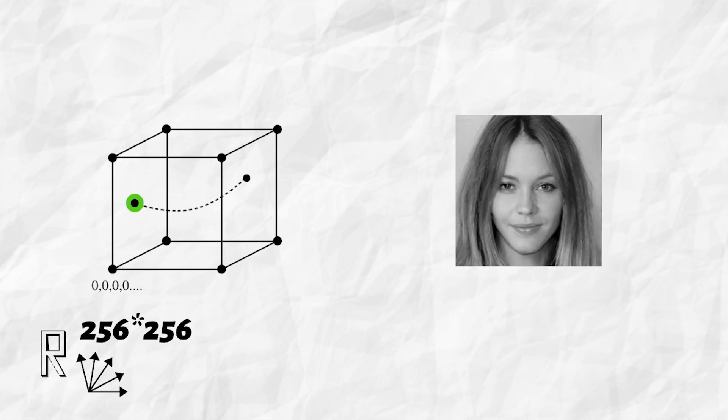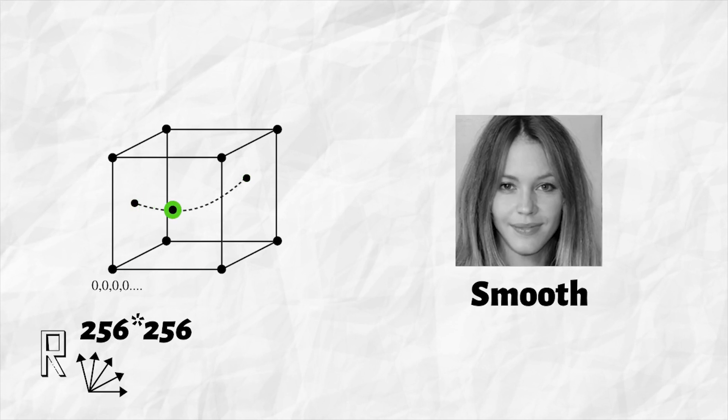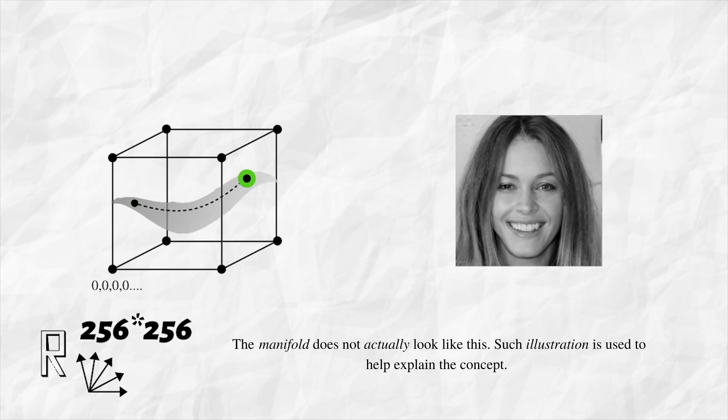But if we follow a path such that the intermediate points are also faces, the transition from no smile to smile would be smooth. Turns out, this path lies on the face manifold.